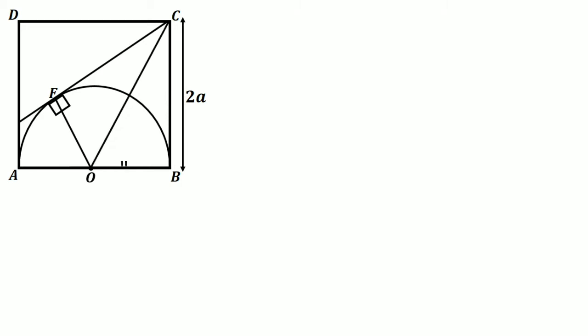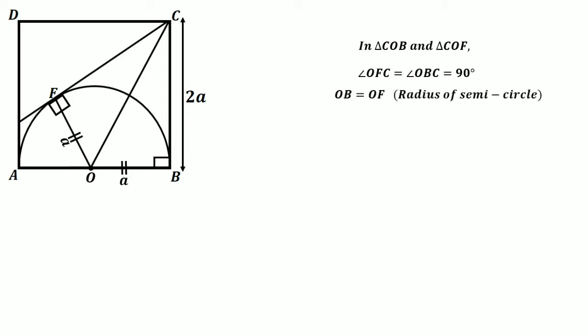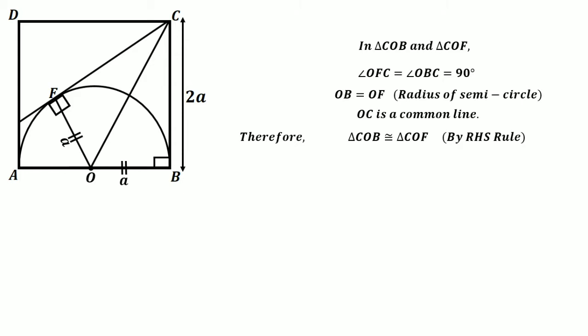Line OB is equal to line OF because it is the radius of the semicircle, which is equal to A, and angle OBC is also equal to 90 degrees. So in triangle COB and triangle COF: angle OFC equals 90 degrees, line OB equals line OF equals the radius A, and OC is a common line. Therefore triangle COF is congruent to triangle COB by the RHS congruency rule.